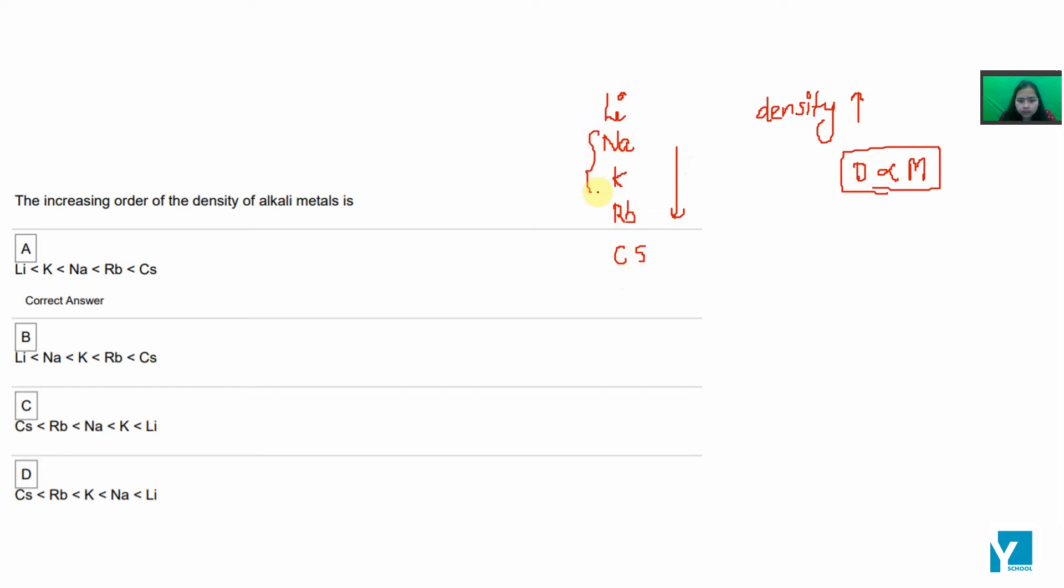But there is an exception between sodium and potassium because in potassium, d electrons enter.